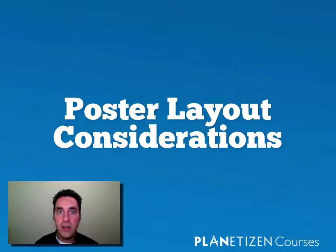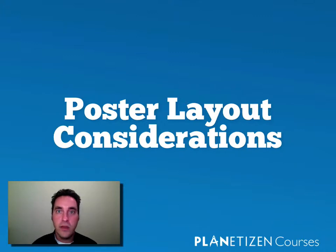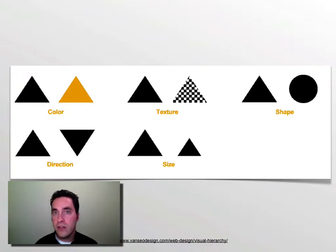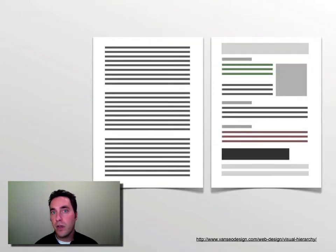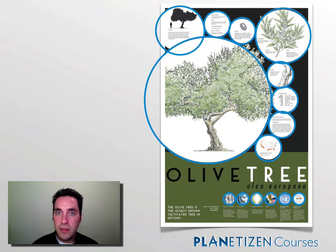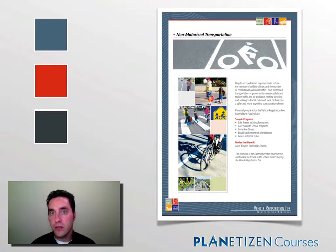We'll cover things like what are the elements that you should consider when laying out a poster — things like the color, texture, shape, direction, and size of the elements you link. We'll talk about visual hierarchy, the repetition of different elements, and the use of color in your posters.